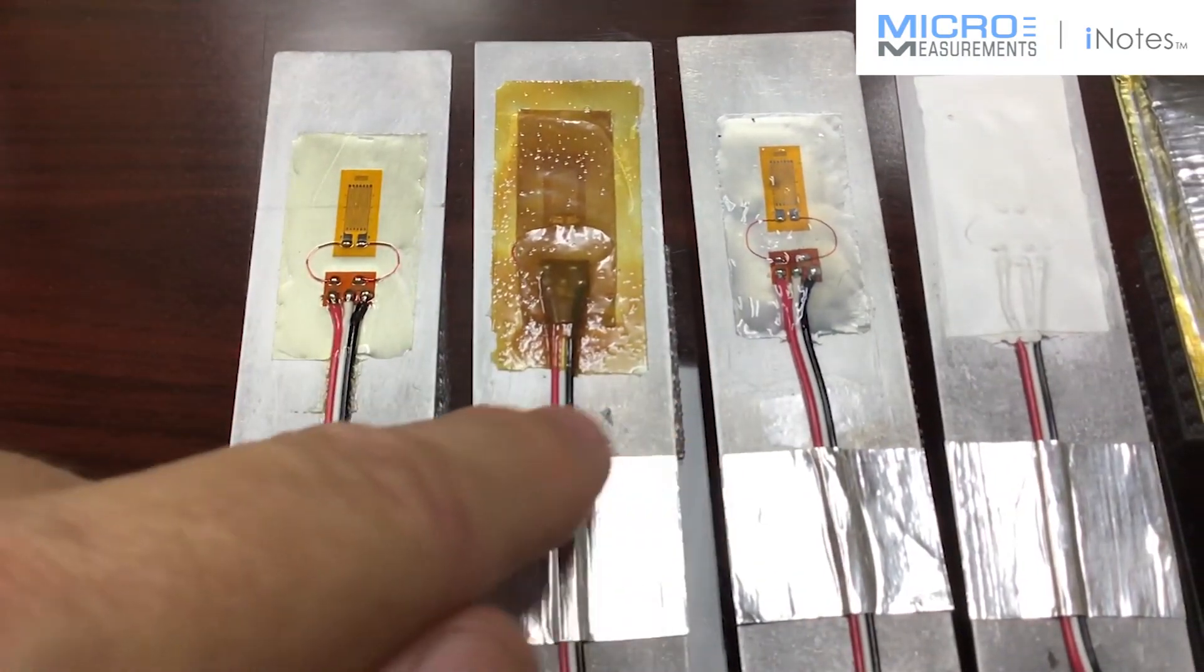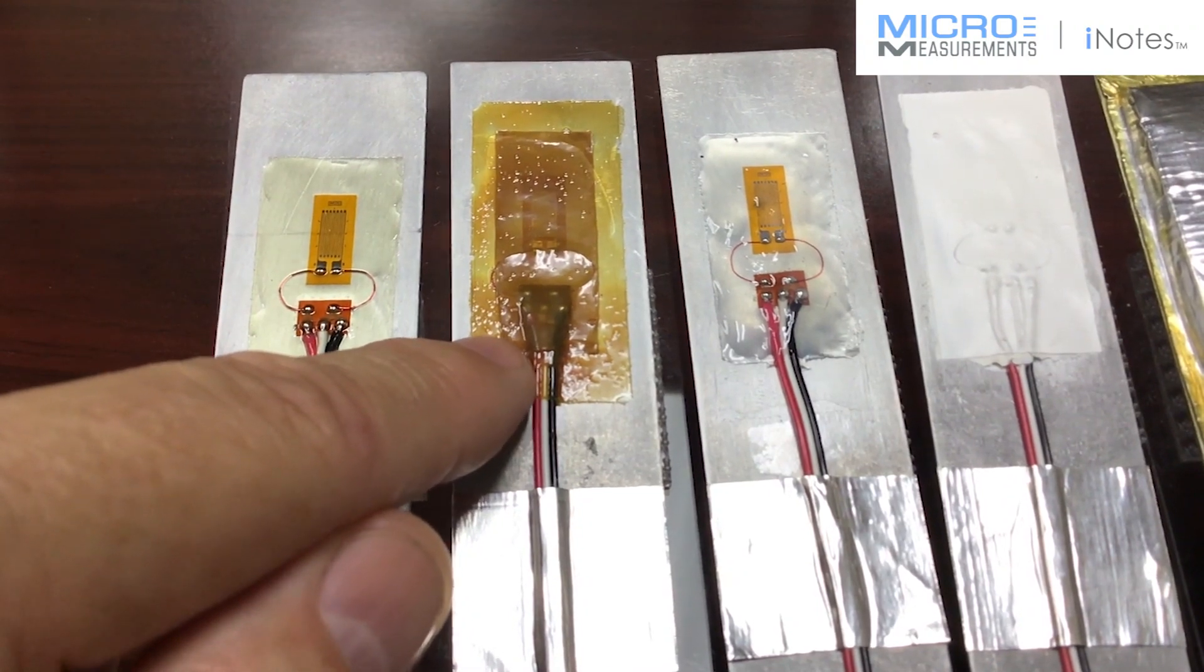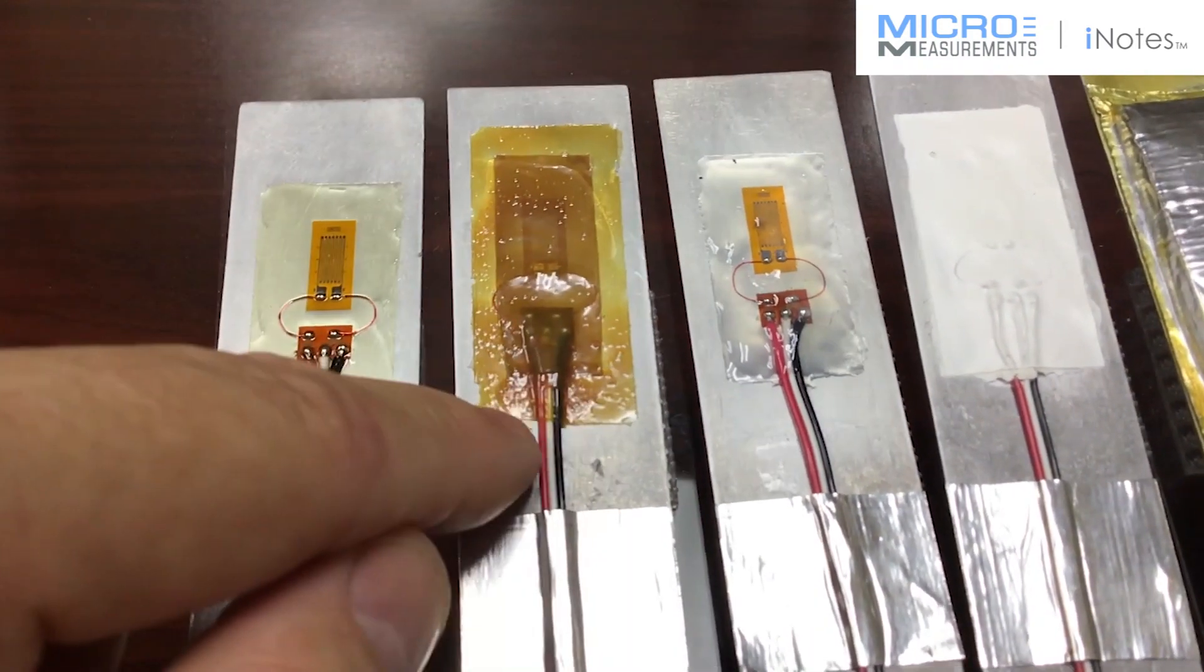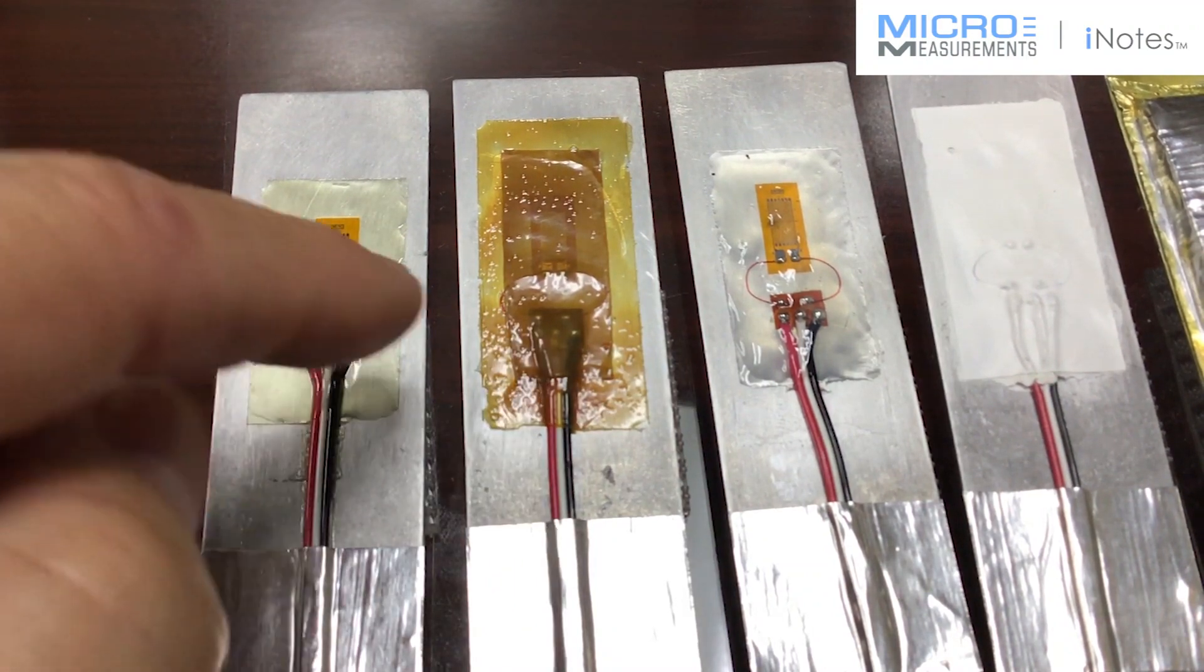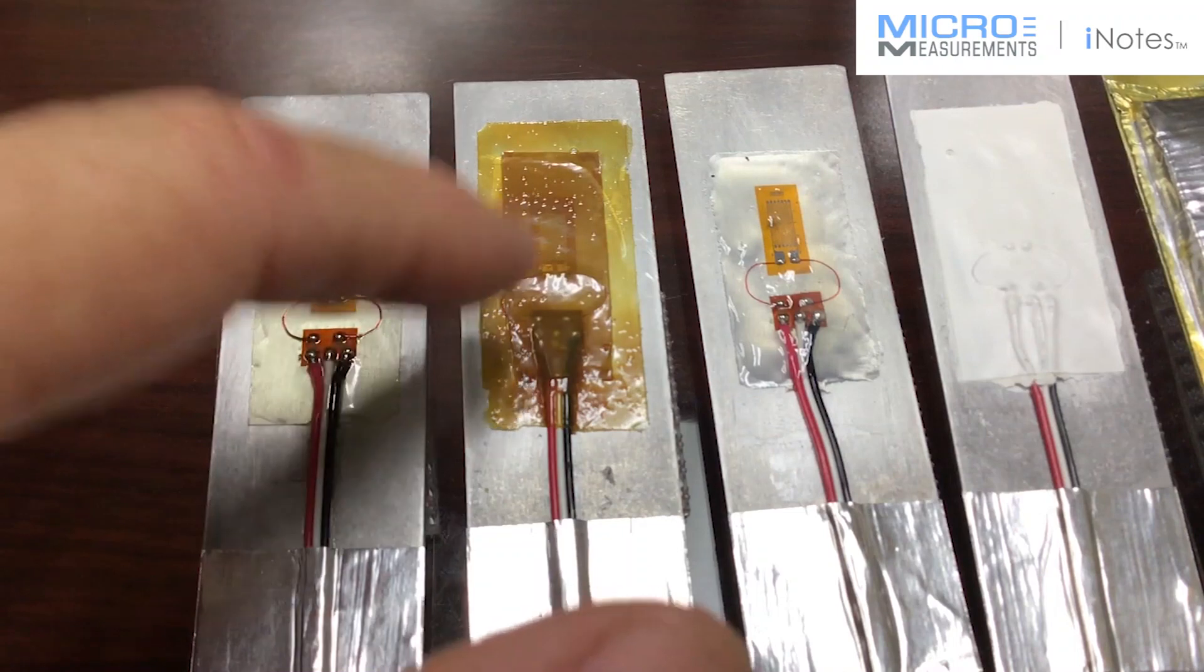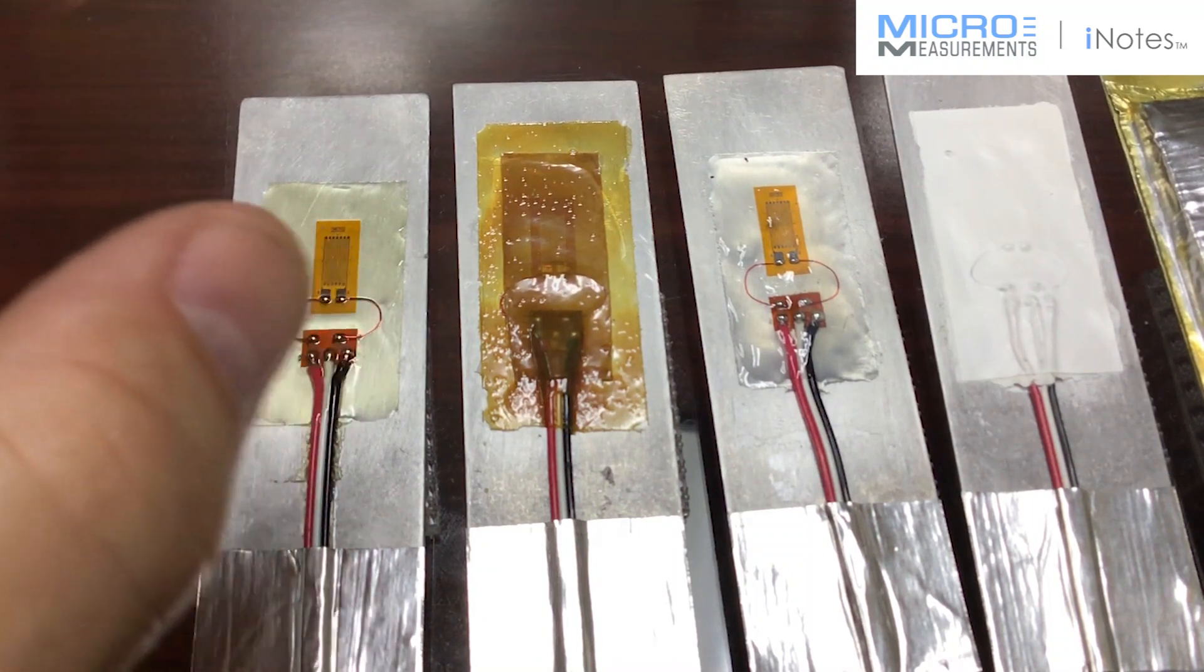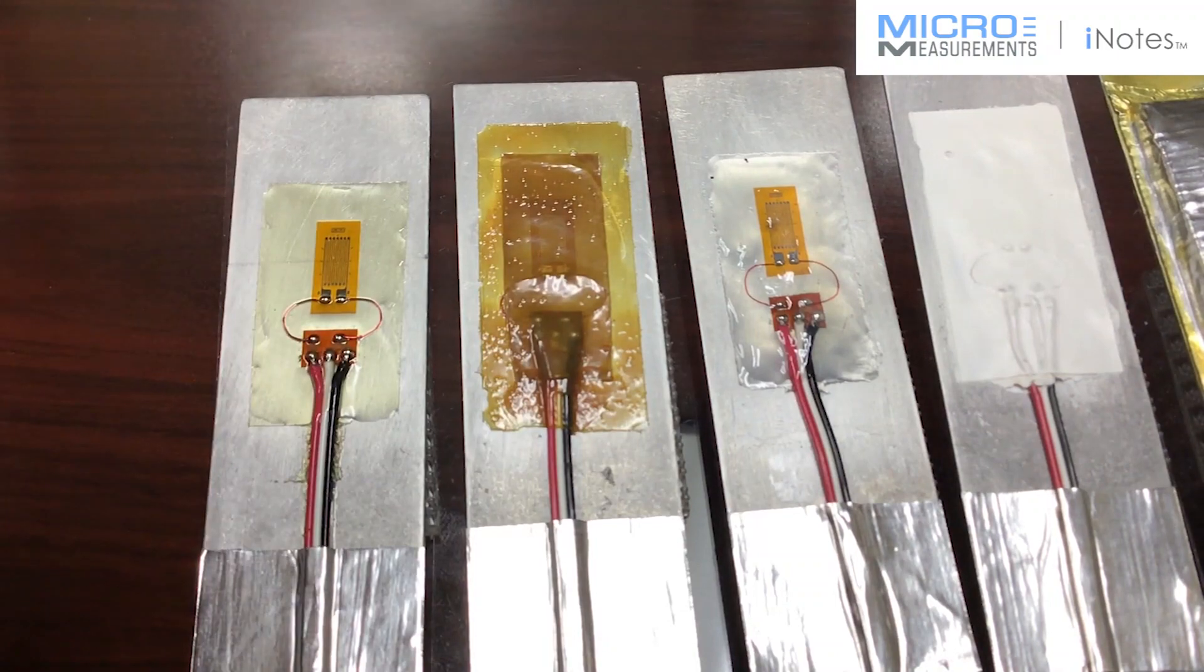The next one is our M-Coat B. M-Coat B is a single part nitrile rubber that you apply over top of the strain gauges, and oftentimes you apply it over top of other environmental coatings as well. This will help to enhance the moisture protection as well as the chemical resistance of coatings such as maybe a wax coating or some of the other coatings like M-Coat D.